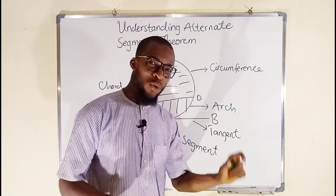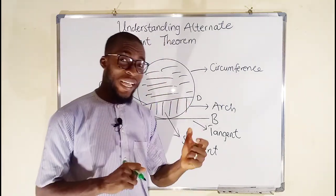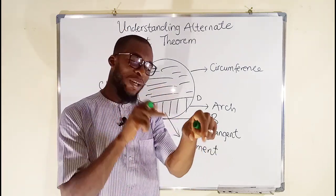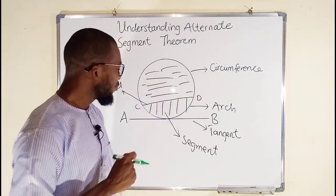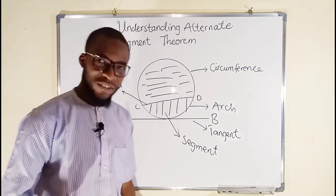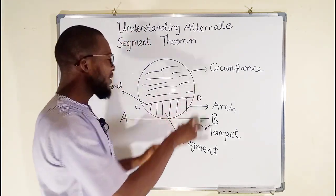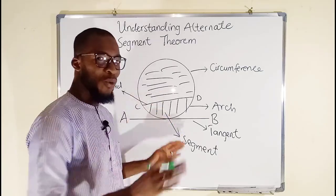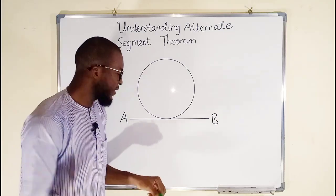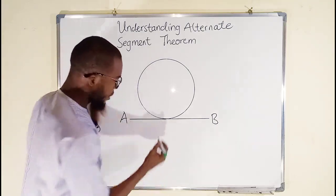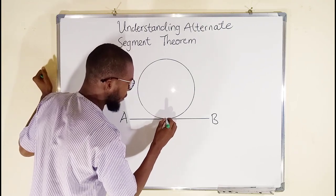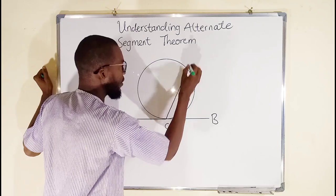We want to define the angle formed by the chord and the tangent. Therefore, one leg of the chord must touch the point where the tangent touches the circumference at exactly one point. So we want to construct a chord that will touch this point where the tangent touches the circle. Let me clear all these and draw a nice chord. So I have cleared everything. We want to draw a chord that will touch this point — let me call it C. So this is a chord.